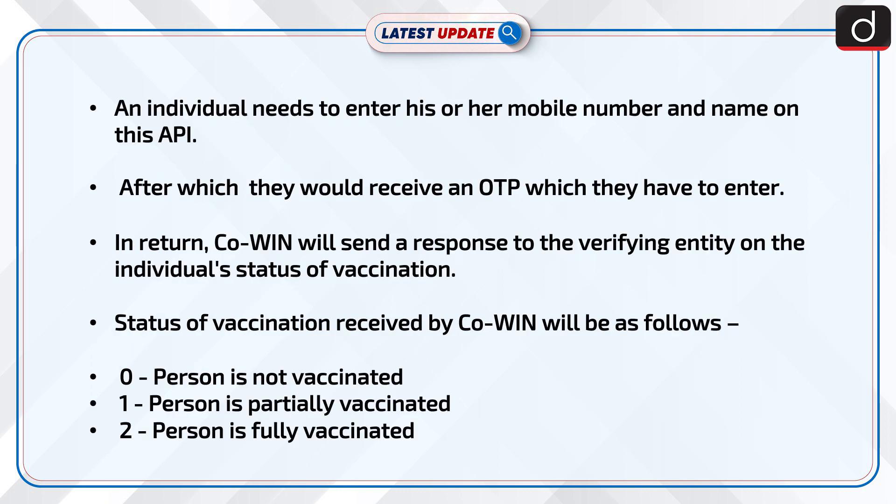An individual needs to enter his or her mobile number and name on this API, after which they would receive an OTP which they have to enter. In return, Kowin will send a response to the verifying entity on the individual's status of vaccination.